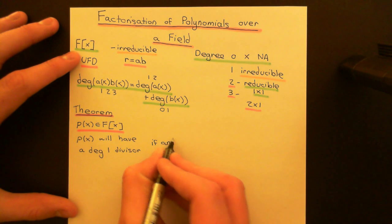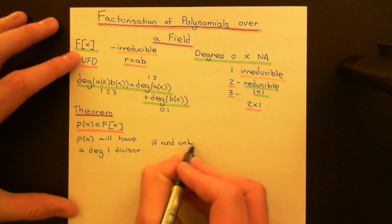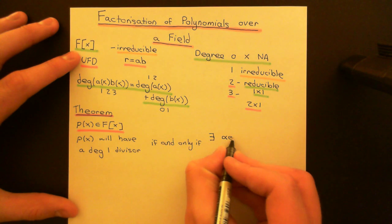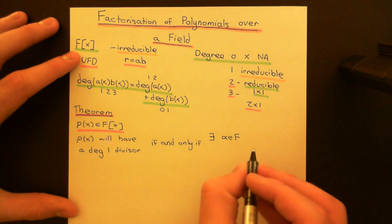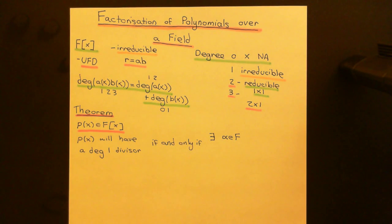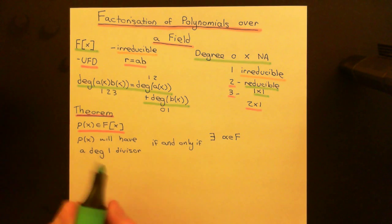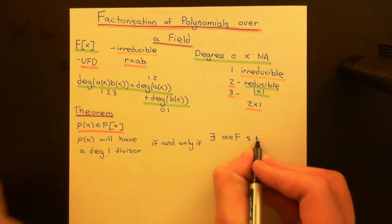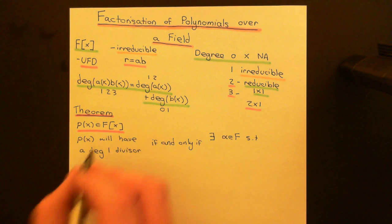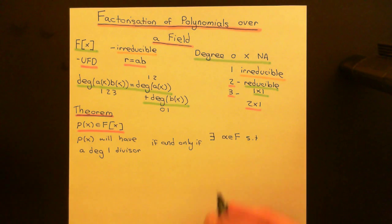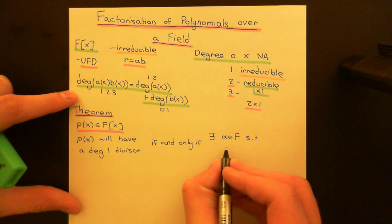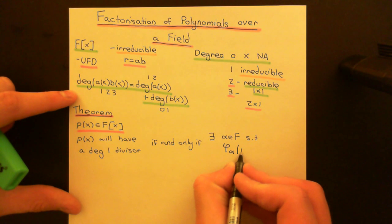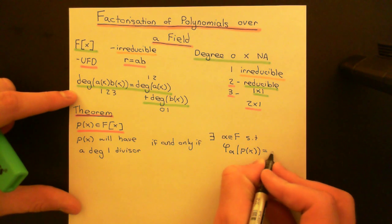If and only if there exists some alpha which is an element of the field — the field which we're using as our coefficient ring in this ring of polynomials F adjoin X — such that if you evaluate the polynomial P of X at alpha, the answer is 0. So you're applying the evaluation homomorphism, what we could denote phi sub alpha, on P of X, and you'll get 0.